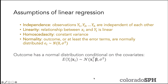There are a few important assumptions of linear regression. First is an assumption of independence — observations y1, y2 through yn are independent of each other. Next is the linearity assumption: the relationship between xi and yi is linear. Then homoscedasticity, the constant variance assumption, and normality — we assume the error terms are normally distributed. With the normality assumption on errors, the expected value of the outcome given covariates also has a normal distribution with mean xi-transpose-beta and variance sigma-squared.